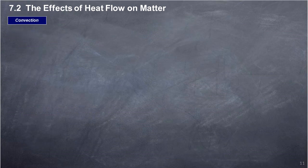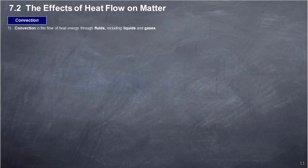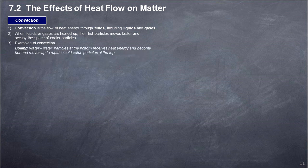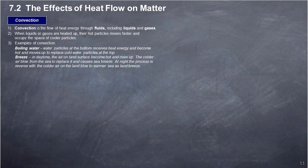Convection is the flow of heat energy through fluids, including liquids and gases. When liquids or gases are heated, their hot particles move faster and occupy the space of cooler particles. Examples of convection: Boiling water — water particles at the bottom receive heat energy, become hot, and move up to replace cold water particles at the top. Breeze — in daytime, the air on the land surface becomes hot and rises up; cooler air blows from the sea to replace it, causing sea breeze. At night, the process is reversed, with cooler air on the land blowing to the warmer sea as land breeze.